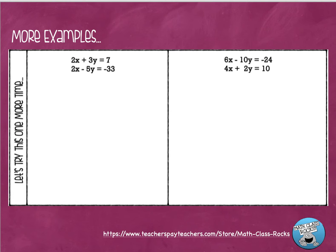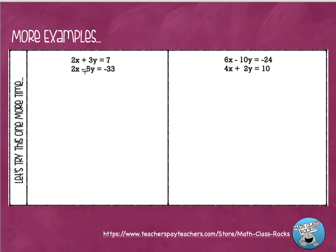Alright, let's look at another example. This time I've got 2x plus 3y equals 7, and 2x minus 5y equals negative 33. They're already in standard form and stacked on top of each other — everything's all lined up. The problem is I don't have opposite coefficients. I have two positive 2s on the x's — if I add a 2 and a 2 it gives me a 4. And I have a positive 3 and a negative 5 on the y's, which aren't opposite coefficients because they're not the same number.